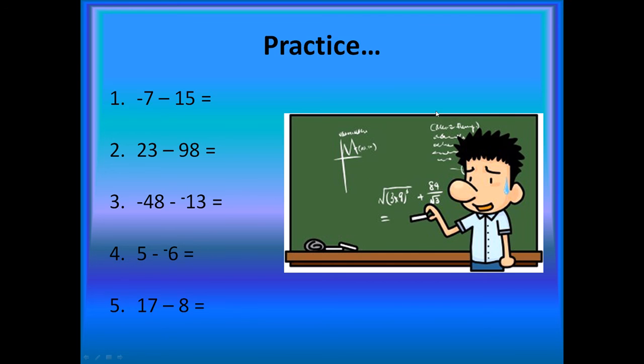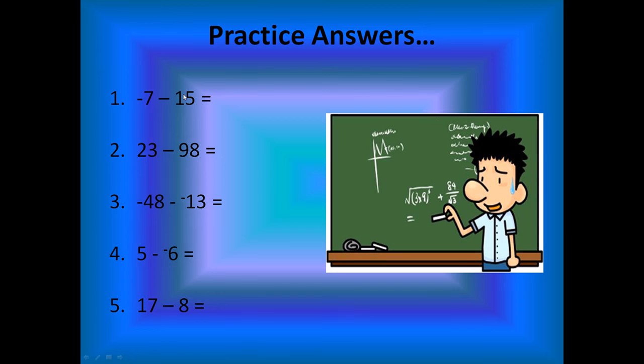Welcome back. We're going to take a look at your answers here. I have negative 7 take away 15. So we did keep, change, opposite. So you should have had negative 7 plus negative 15. The signs were the same, so you added them. And you have negative 22. Yes.